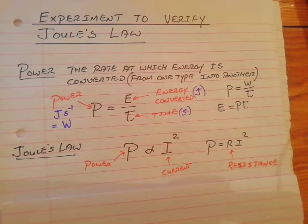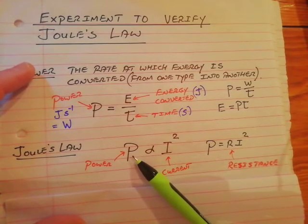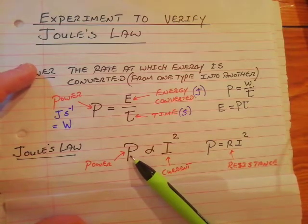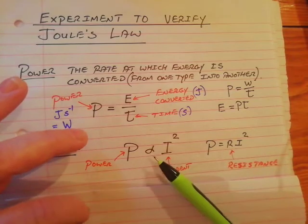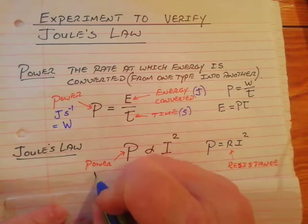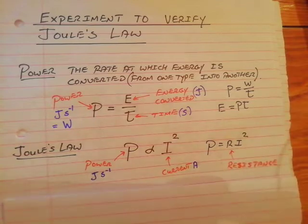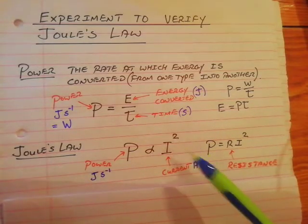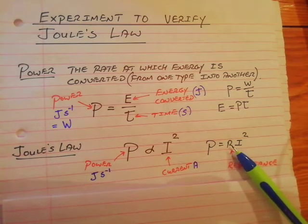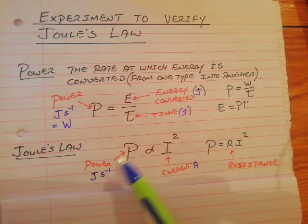The second thing is: what is Joule's Law? As we said yesterday, Joule's Law states that the power of a conductor — the number of joules per second it produces — is directly proportional to the current squared. Power, measured in joules per second or watts, is directly proportional to current squared, measured in amps. The constant of proportionality is the resistance, so you can write: power equals resistance multiplied by current squared. If asked to state Joule's Law, that formula, well labelled, is sufficient for full marks.